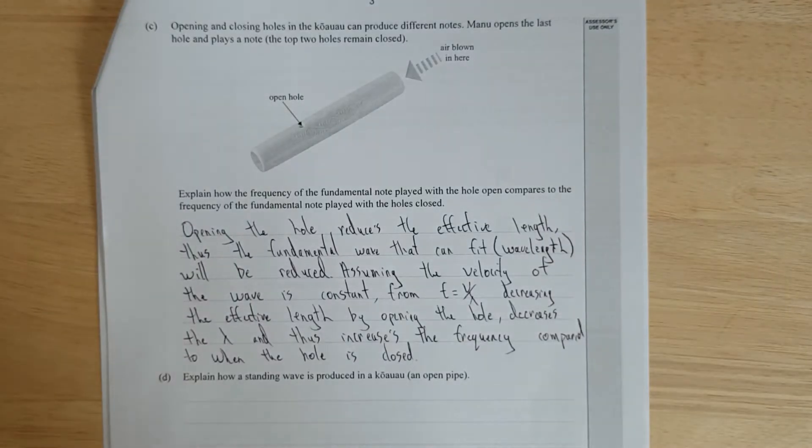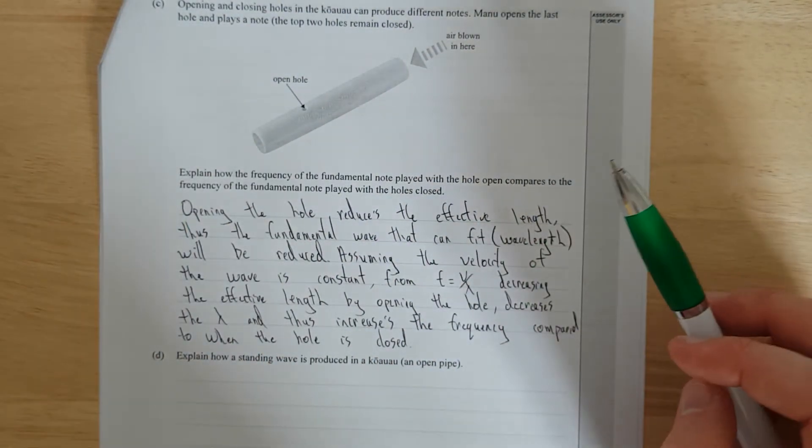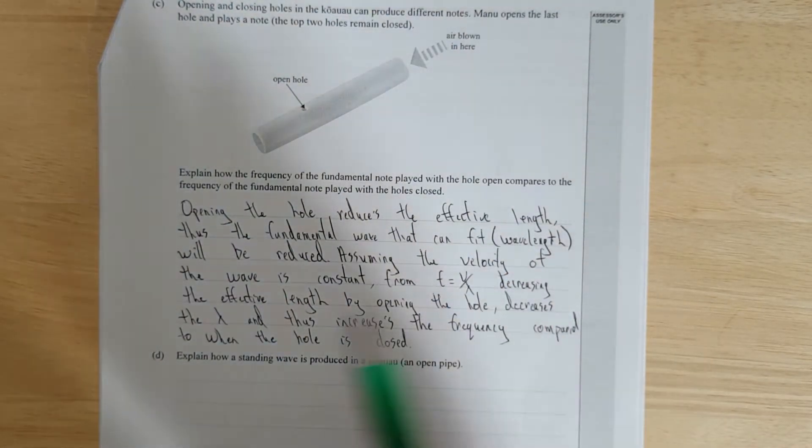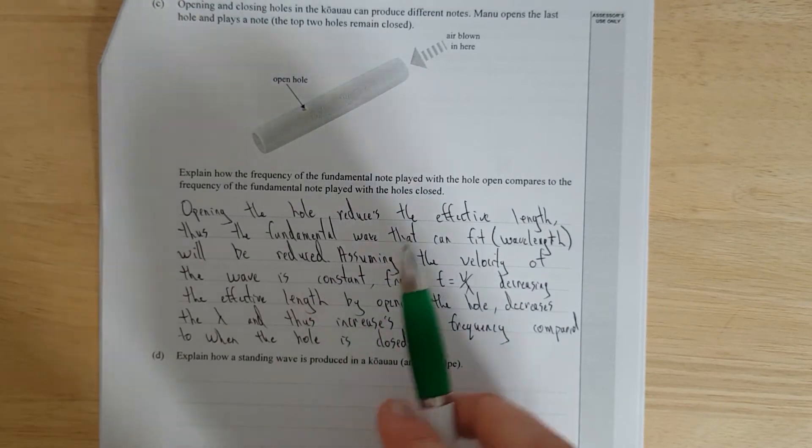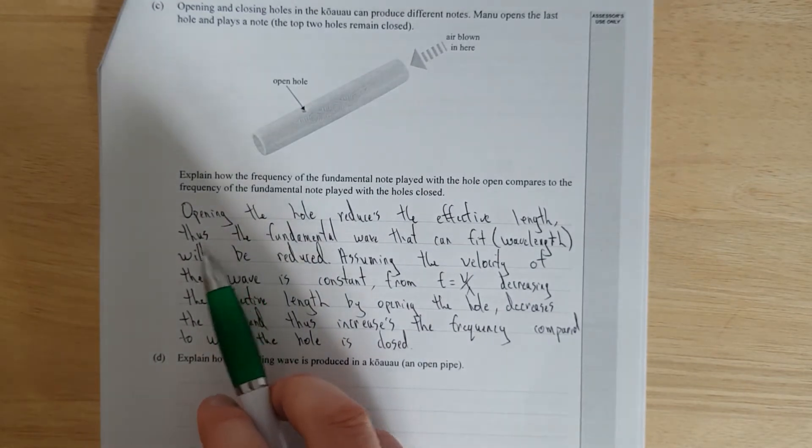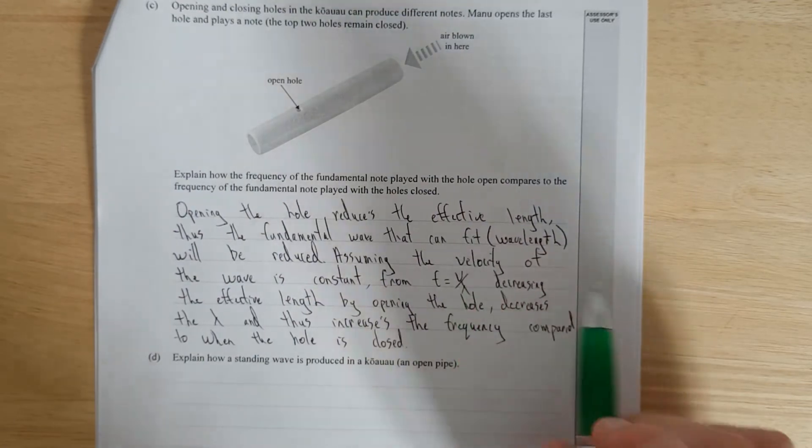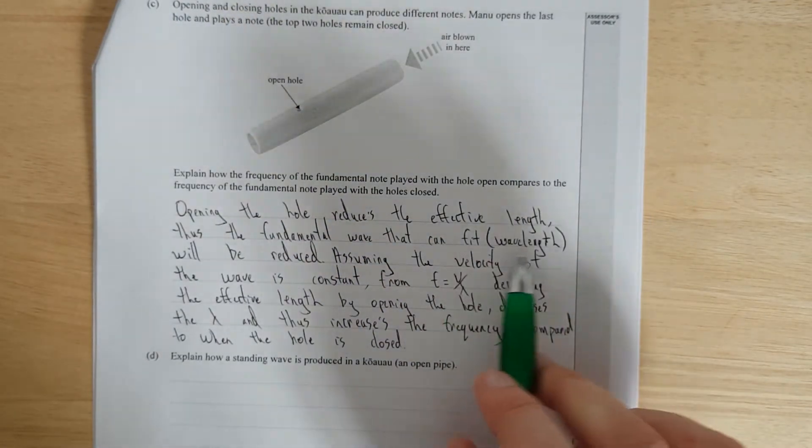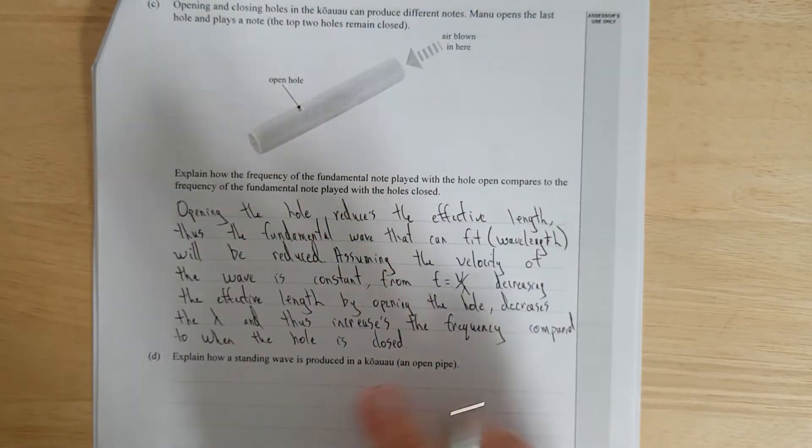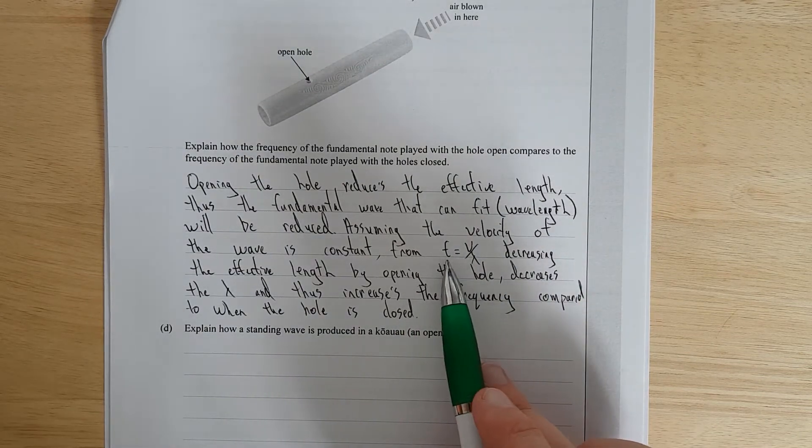All right, so this is one of the first questions I've actually had to go over, because this is a compare and contrast question, which is arguably excellent, although I'm just looking at the mark schedule in front of me, and it's only a merit. So I just said, opening the hole reduces the effective length. You've got to be careful with that. It's the proper way to word it. Thus, the fundamental wave that can fit. Very careful wording with fit, because that's sort of how it works.